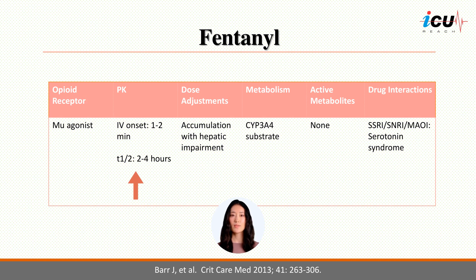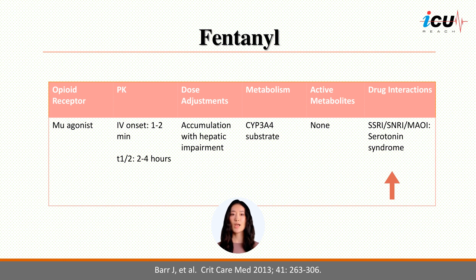Because fentanyl is metabolized in the liver, additional accumulation can occur in hepatic impairment; however, there is no recommendation for dose adjustment in these patients for intravenous use. Fentanyl has affinity for both 5-HT1A and 5-HT2A receptors and is a weak serotonin reuptake inhibitor, so concomitant use with SSRIs, SNRIs, and MAOIs may place a patient at increased risk for serotonin syndrome.